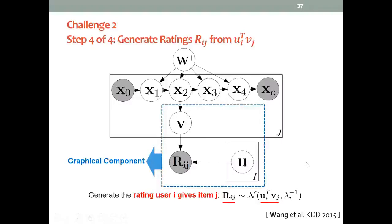Now if we define this kind of graphical component, then given this component, given this document X and the ratings R, we can infer the latent variables including V and U, and then we can use the V and U to make the prediction for the unobserved ratings or preferences.